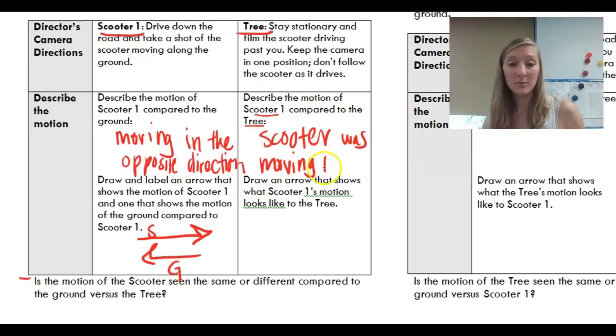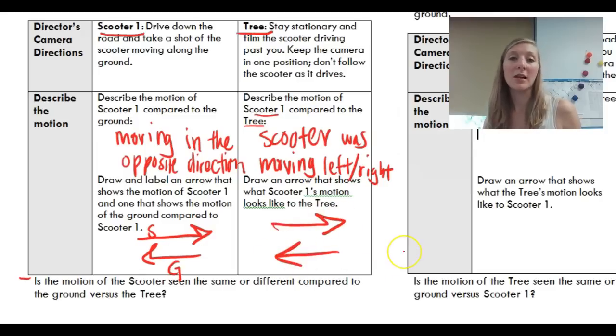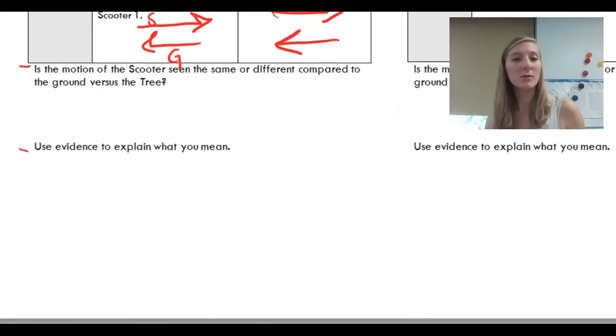Now how you describe this is going to sort of depend on your data. Either it was moving left or right, depending on how you filmed it and set up that action shot. So it's going to depend on whatever your data was. So you have an arrow going to the right or to the left, just depending on your data. Now that's going to get us to these questions.